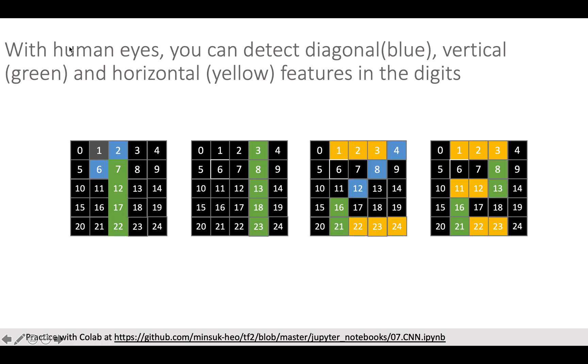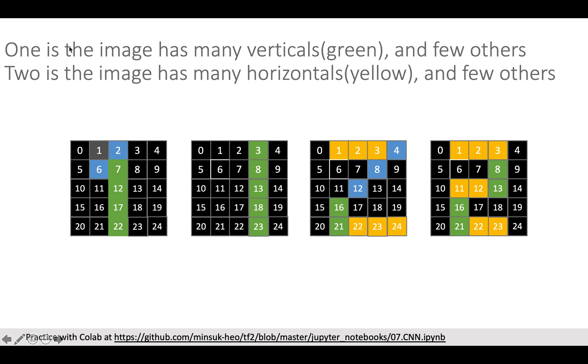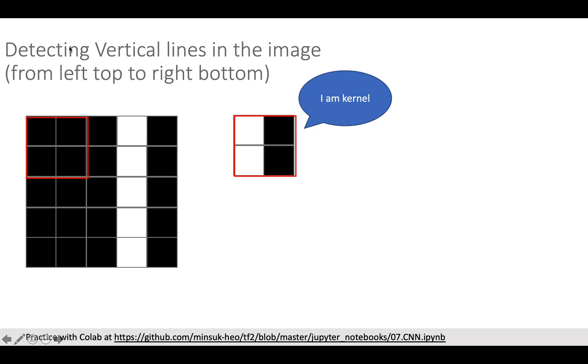Here I prepared digit 1 and digit 2 examples for understanding how CNN detects horizontal or vertical lines. You and I can detect diagonal, vertical, horizontal features from these 2D images. We know that if there are many vertical lines, it is most likely digit 2. There is a kernel which is a 2D matrix for detecting features. Say we have this kernel for detecting vertical line. You can see there are two white pixels vertically in this corner.